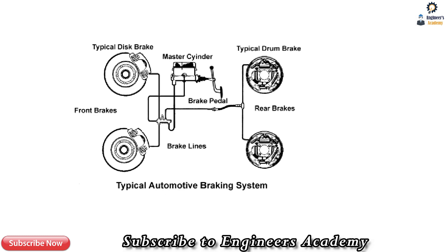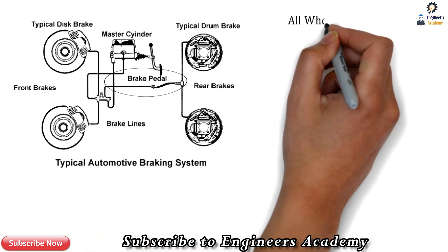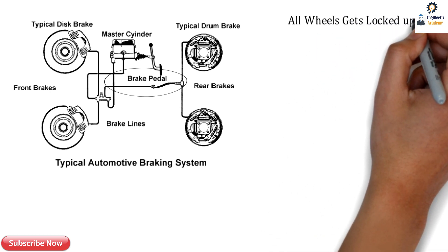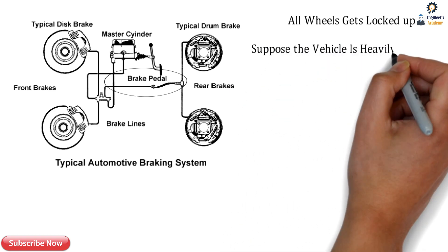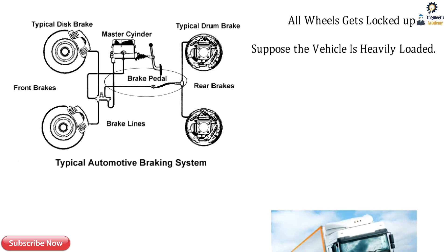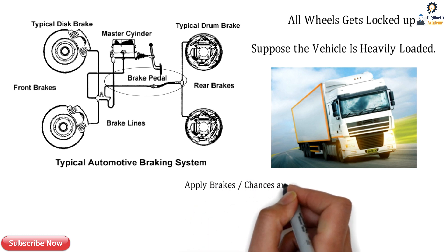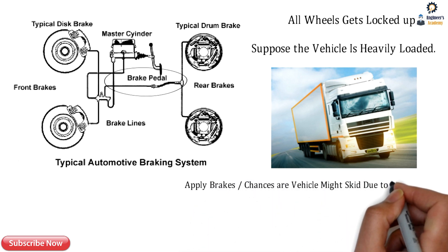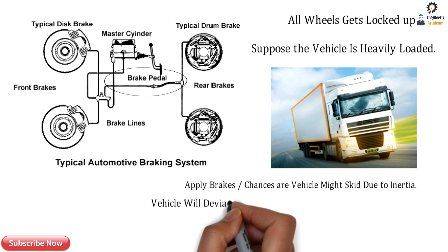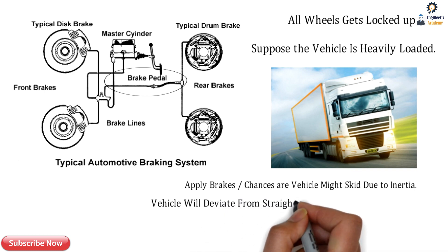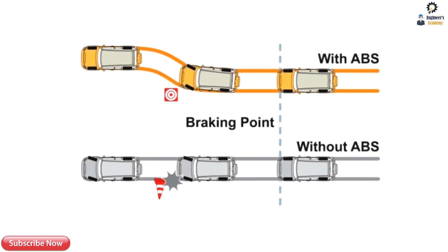Whenever we apply pressure on the brake pedal while the vehicle is in a running condition, all four wheels get stopped due to shoe expansion from drum brakes or disc brakes. In a typical automotive braking system, all wheels get locked up and we get the braking effect. If the vehicle is heavily loaded and moving at high speed, application of the brakes might cause the vehicle to skid due to inertia, and the vehicle will deviate from its straight line.